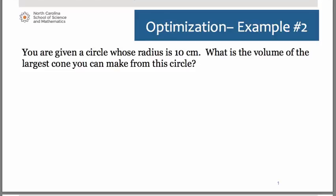We're going to take a look at an example of an optimization problem involving the maximization of the volume of a cone. We have here a circle and suppose it measures 10 centimeters in radius. What we want to do is take the circle and create a cone out of it.